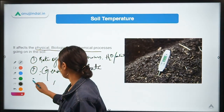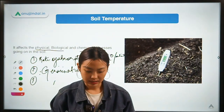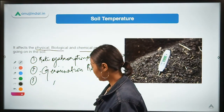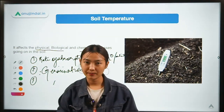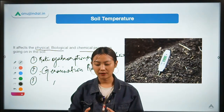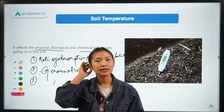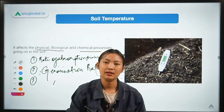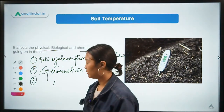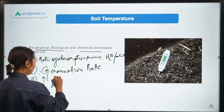The third point is that soil temperature also helps in microbial activity. When there is a higher amount of microbial activity in the soil, there will be more decomposition taking place, and the nutrient availability from the soil to the plant will also increase. So it accelerates microbial activity.